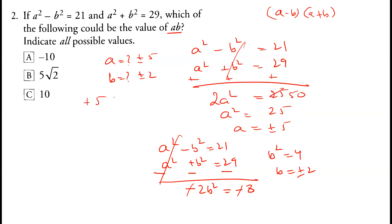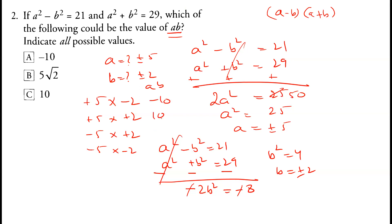So a equals plus or minus 5 and b equals plus or minus 2. We have four scenarios: plus 5 times minus 2, plus 5 times plus 2, minus 5 times plus 2, and minus 5 times minus 2. These give us minus 10, 10, minus 10, and positive 10. So the two possible values of ab are either minus 10 or positive 10, so options A and C.